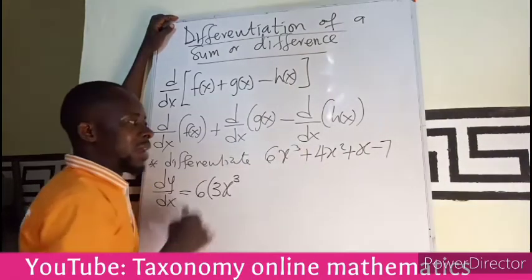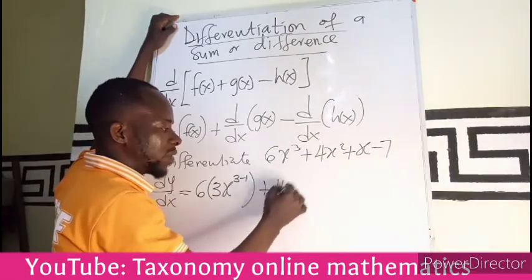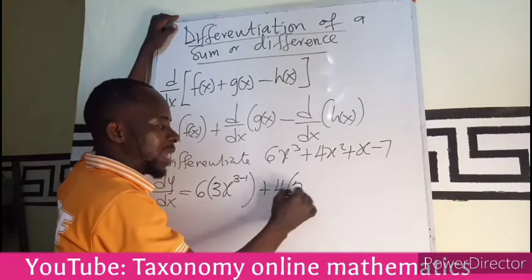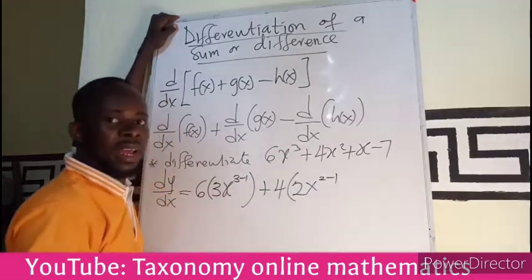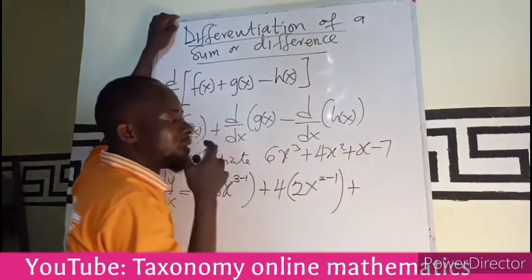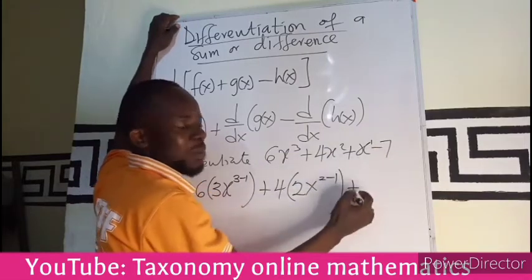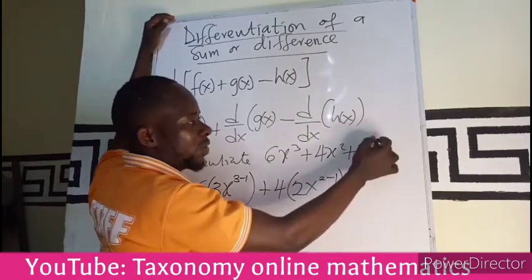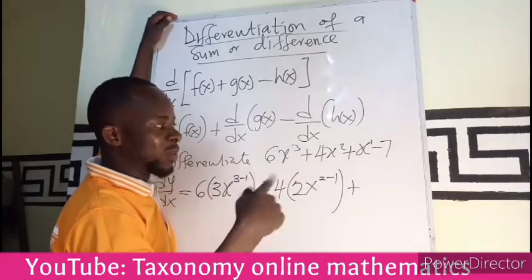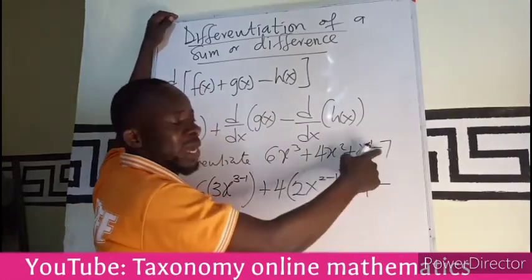Plus we hold the constant, we bring the exponent to multiply the whole function, then we reduce the value of the exponent. Here there's a one there, the one will come in front to multiply it. When you subtract 1 from 1, you get 0, so x⁰ will give you 1. Minus, if I differentiate a constant I get 0.